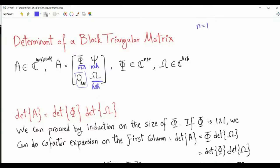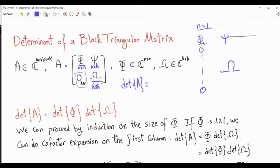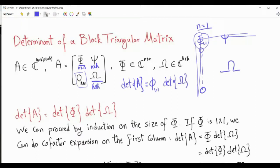We start with the case n equals 1, which means φ is just a 1 by 1 matrix with element φ₁₁, and the first column has zeros below it. The matrix ψ is a row vector, followed by matrix ω. The determinant of A is obtained by cofactor expansion using the first column, which is all zeros except φ₁₁. So det(A) = φ₁₁ × det(ω) = det(φ) × det(ω), establishing the base case.